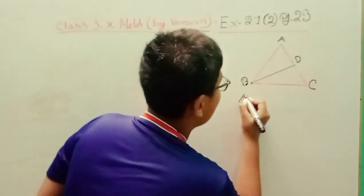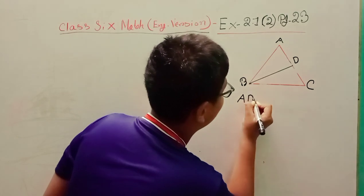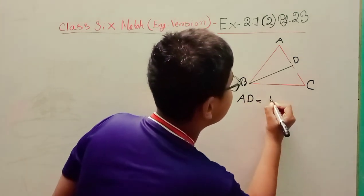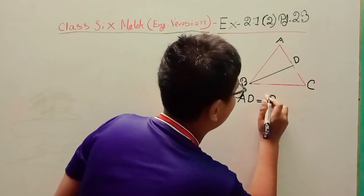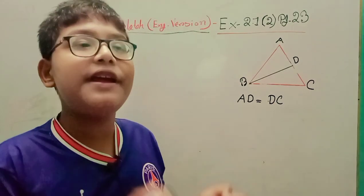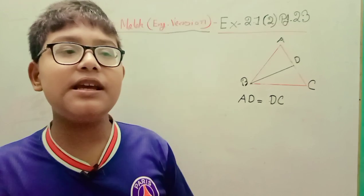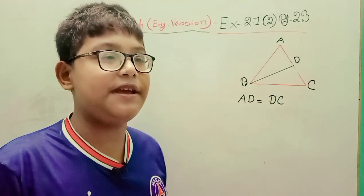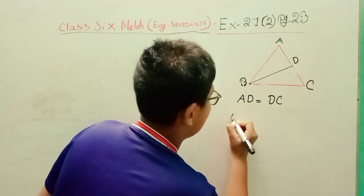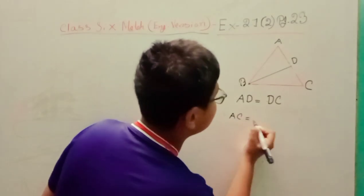Here D is the midpoint, so the length of AC is twice the length of AD. Hence, AC equals 2 times AD.